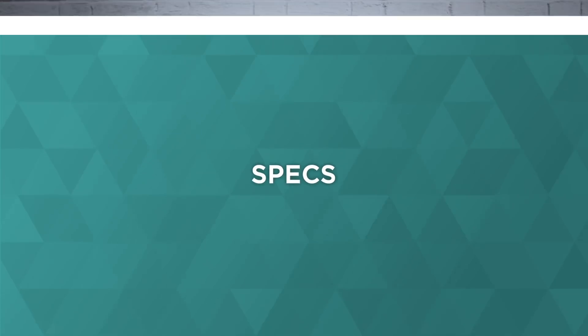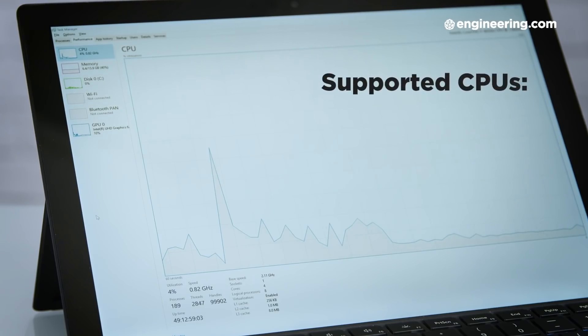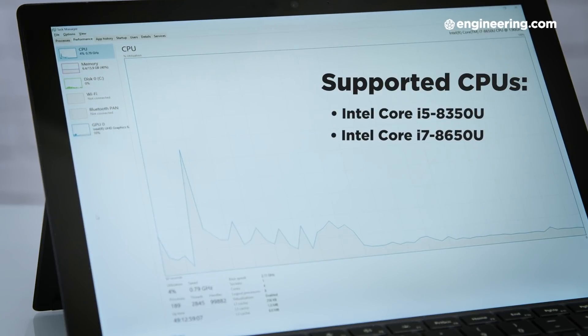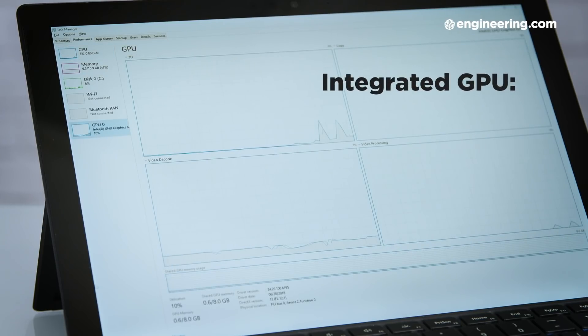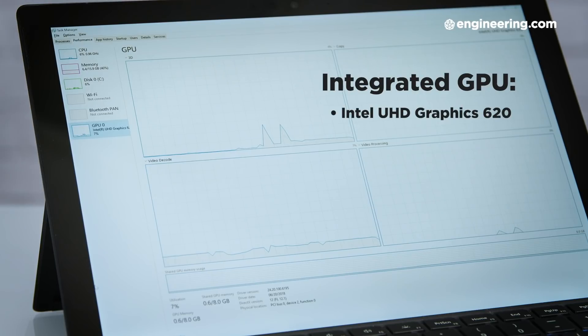Let's move on to the specs of the SP6. There are very limited configuration options. For the CPU, you can choose between the Intel Core i5-8350U or the Intel Core i7-8650U. In both cases, you get integrated graphics with the Intel UHD Graphics 620, and no discrete GPU is available.